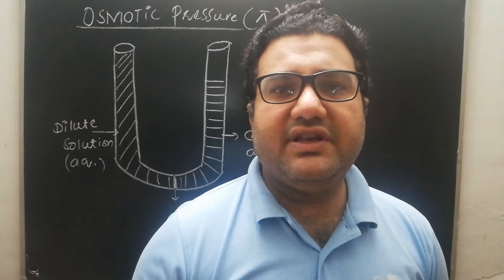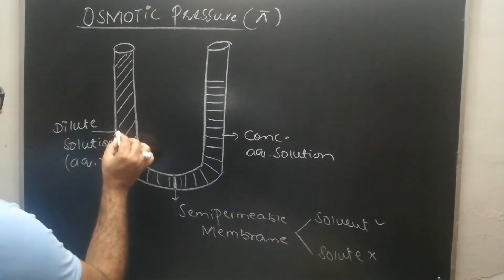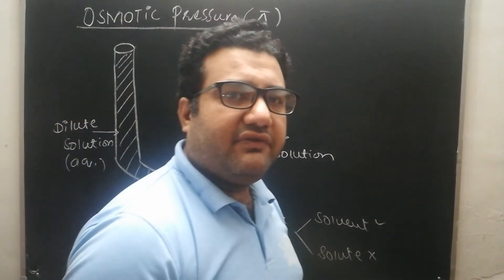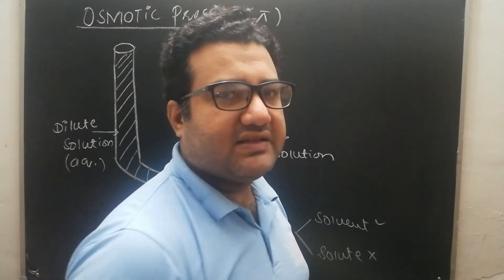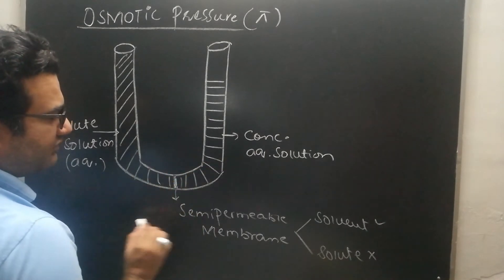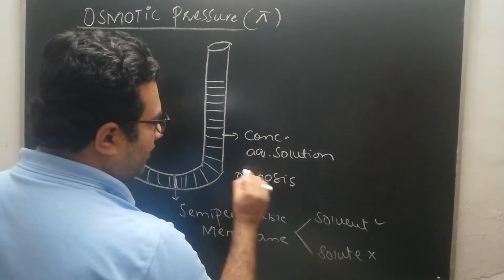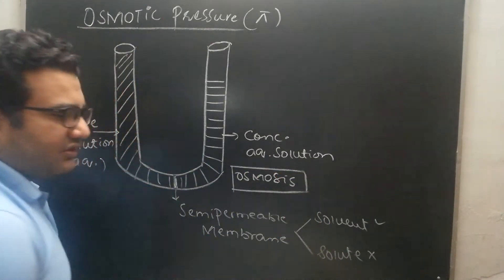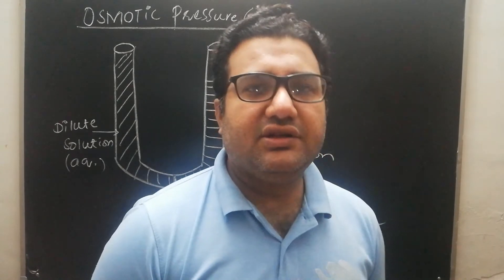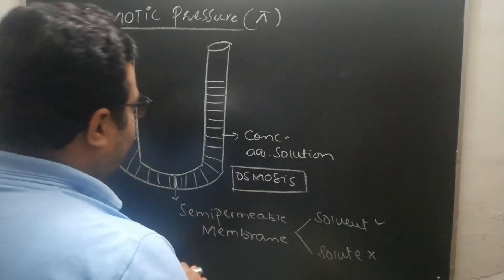You know very well that water or any solvent always moves from the area of high concentration to the area of low concentration. Here, because this is the dilute solution, it will have greater quantity of water, so water will try to move from the dilute solution to the concentrated solution. When water moves from dilute solution to concentrated solution through a semi-permeable membrane, this process is called osmosis.